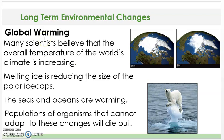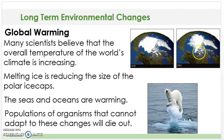The next type of long-term environmental change is global warming. Many scientists believe that the overall temperature of the world's climate is increasing. Melting ice is reducing the size of the polar ice caps, and the seas and oceans are warming. Populations of organisms that cannot adapt to these changes will die out. If you look at these two pictures — one from 1979 and the other from 2003 — you can see the drastic change in the polar ice cap, how much has melted. Here is a polar bear hanging on to a little bit of ice that's left.